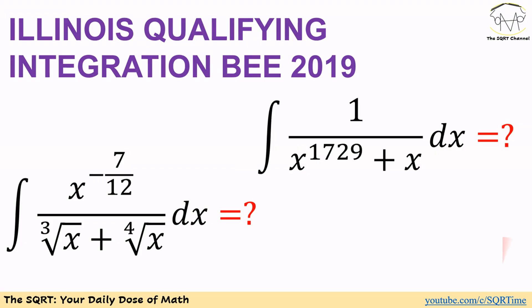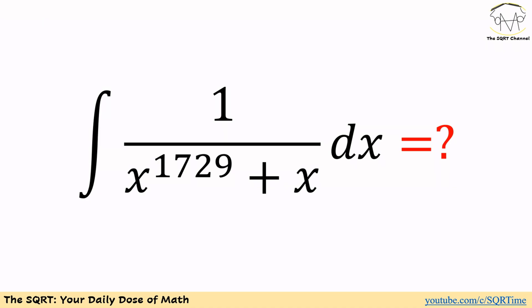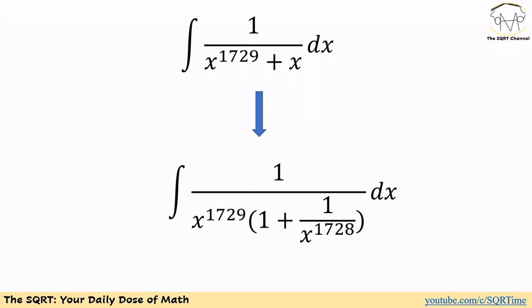Hello everyone, welcome to the SQRT channel. In this video we are going to talk about two problems from the Illinois qualifying exam for integration B from 2019. For the first problem we have the integral of 1 over x^1729 plus x dx. For the second problem, the numerator is x to the power of negative 7 over 12 and the denominator is the third root of x plus the fourth root of x, then dx. Before moving forward, make sure you pause the video to think about these two problems.